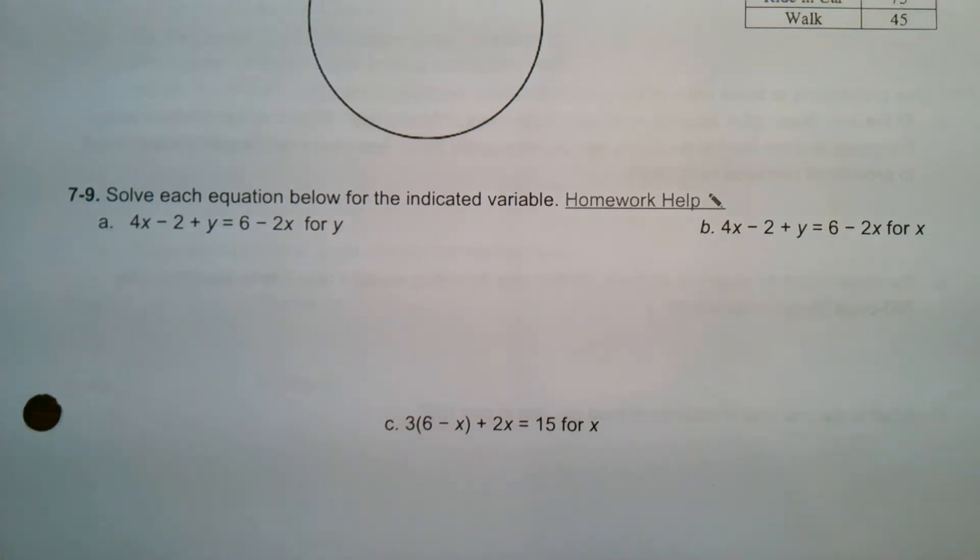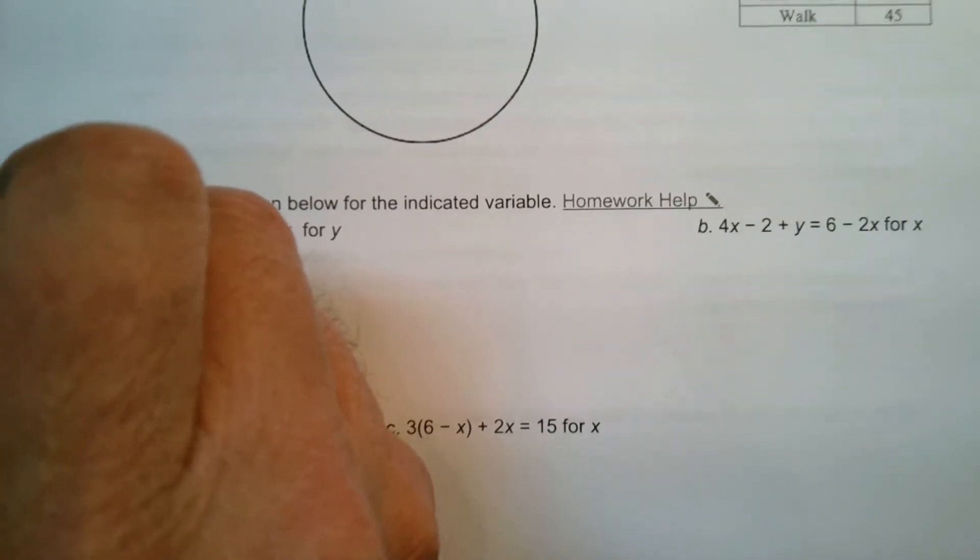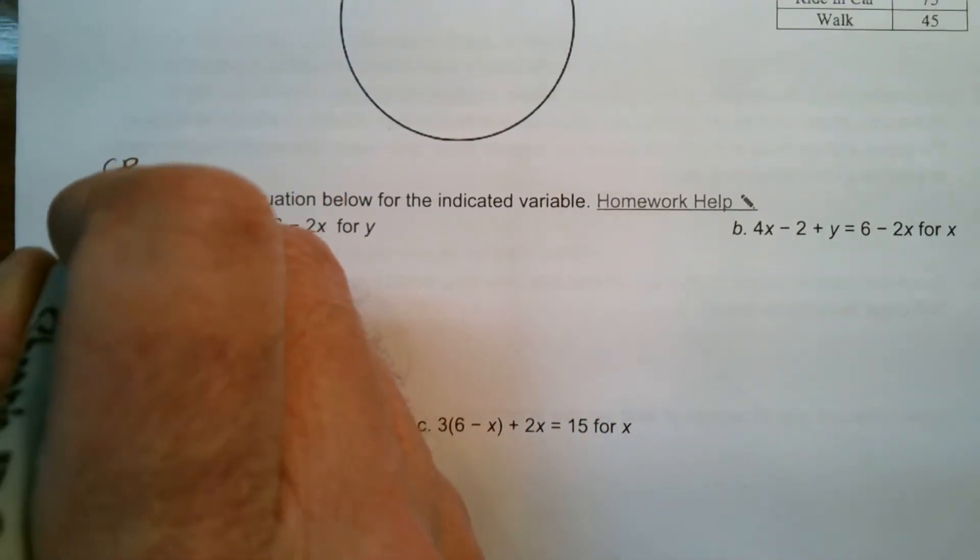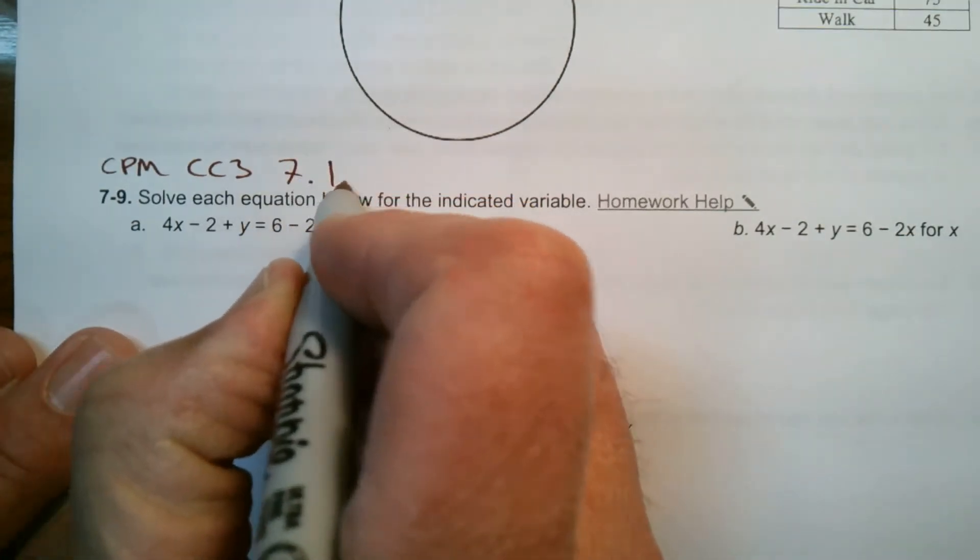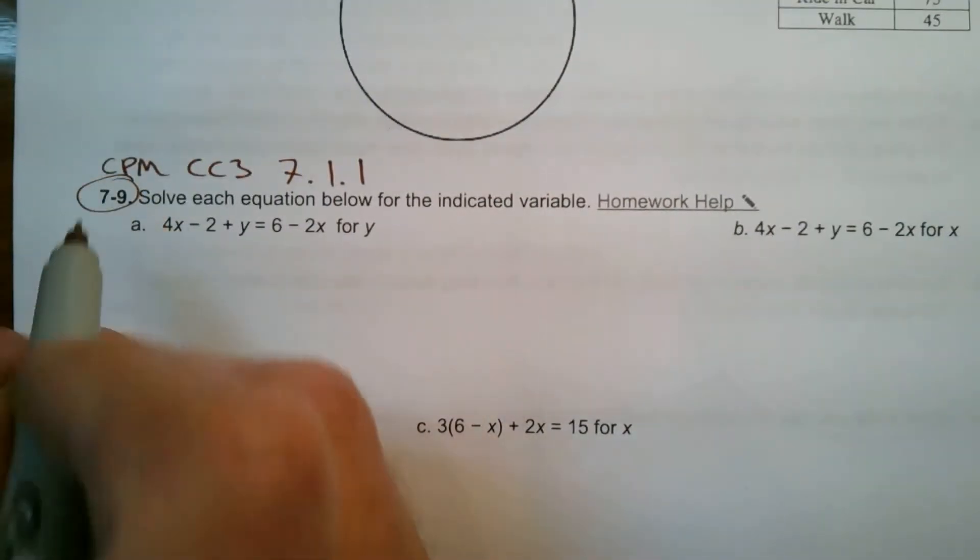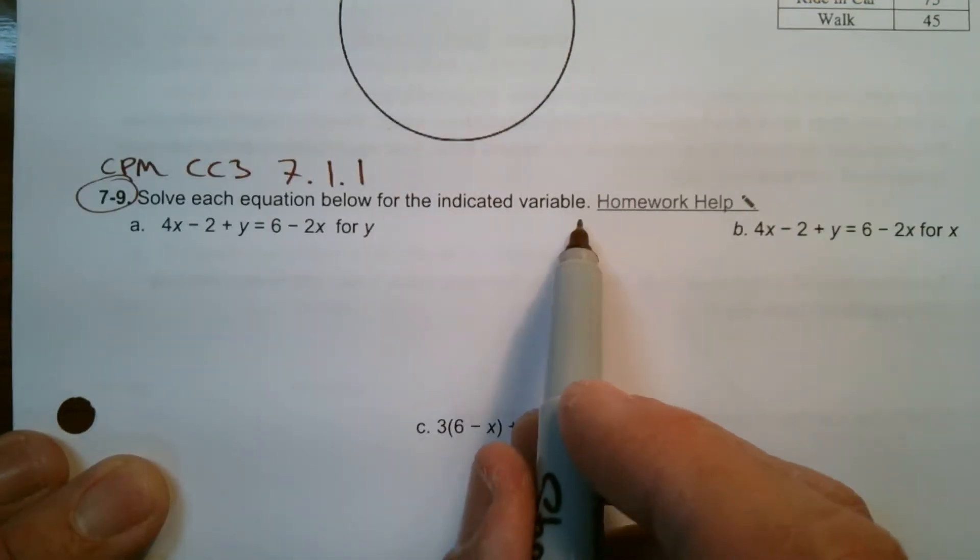Hey folks, Mr. Dell here. I'm looking at solving equations. Some have two variables and some have just a single variable. So we're going to solve an equation for the indicated variable. This is a problem I'm pulling from CPM course three, section 7.1.1. So specifically number 7-9. It says solve each equation below for the indicated variable.